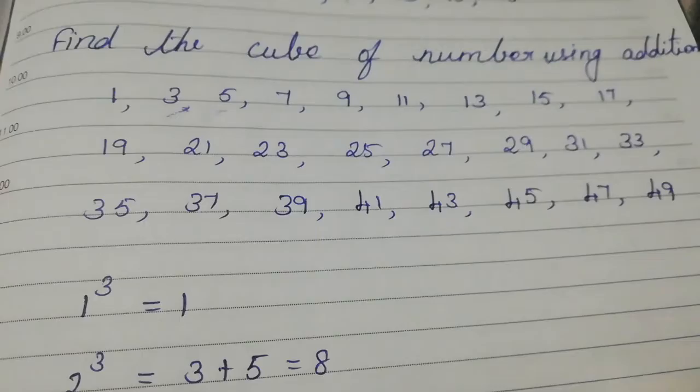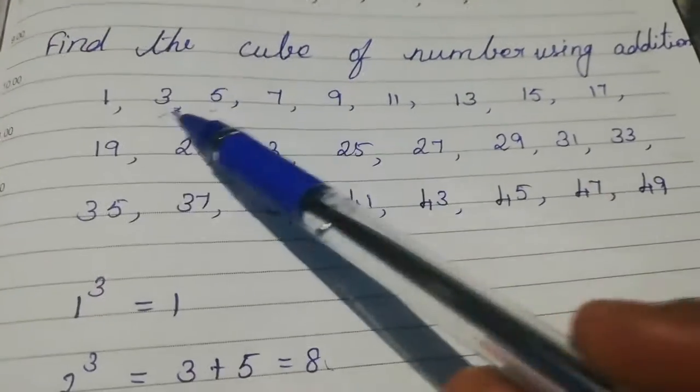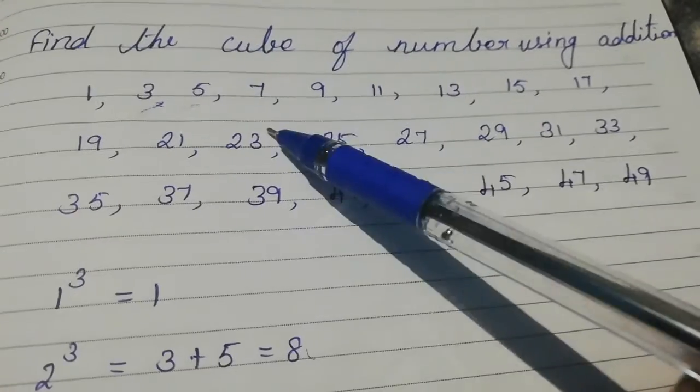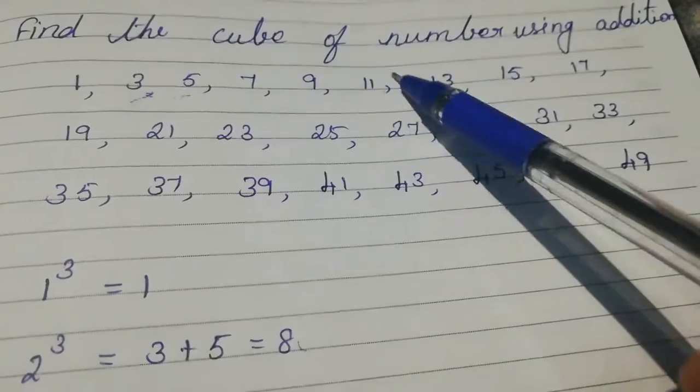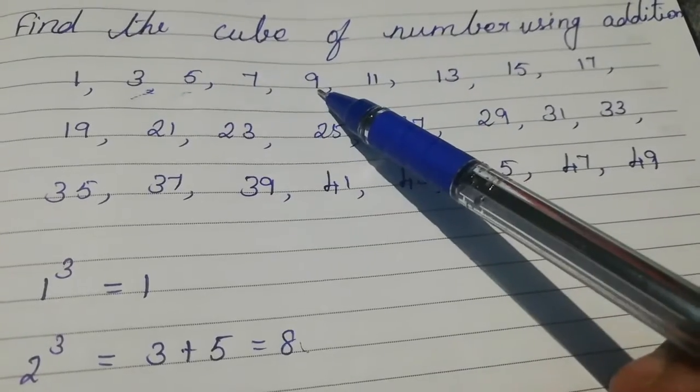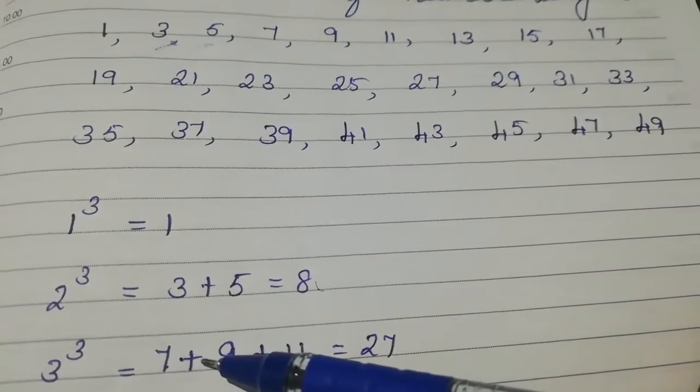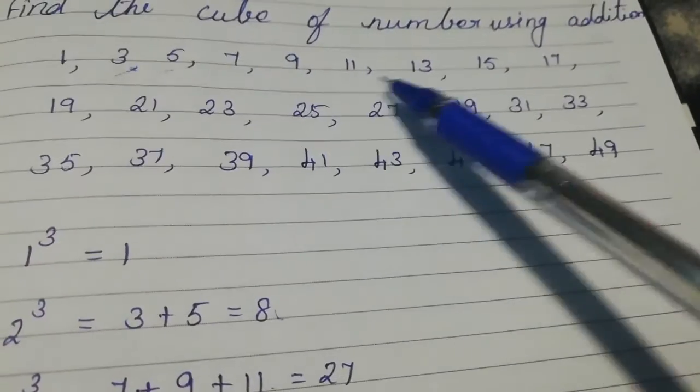3 plus 5 is 8, so 2 cube is equal to 8. Next, 3 cube. What is 3 cube? 7 plus 9 plus 11. So we take three numbers: 7 plus 9 plus 11. 3 cube is equal to 7 plus 9 plus 11, the value is 27. Then 4 cube.